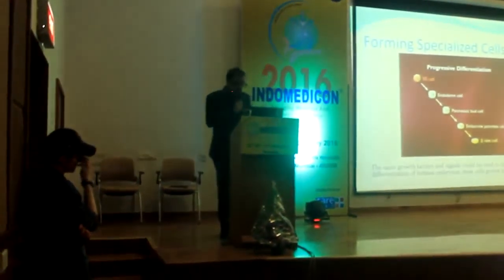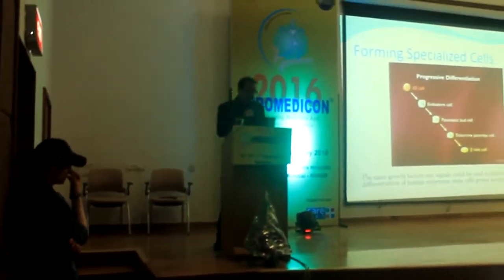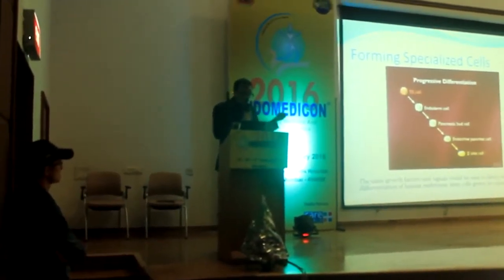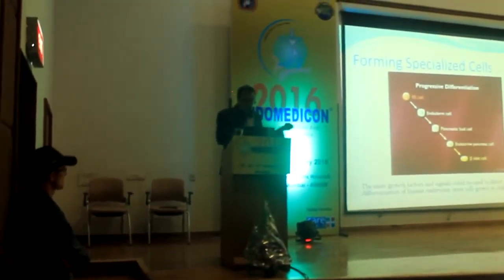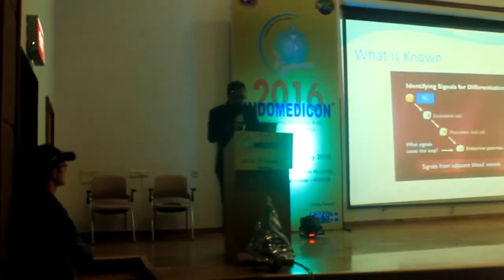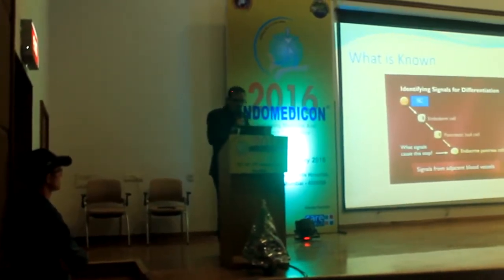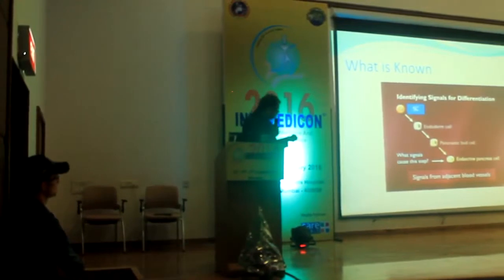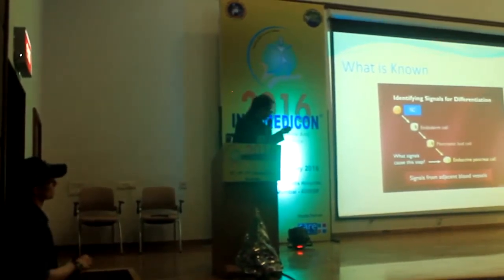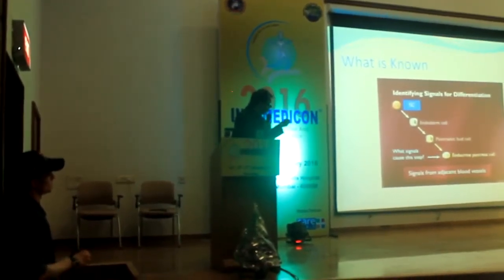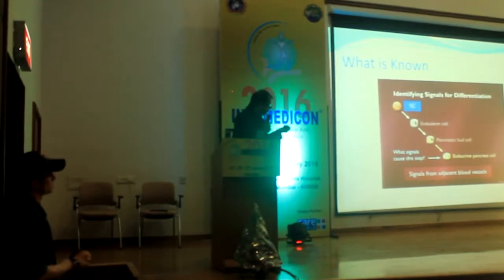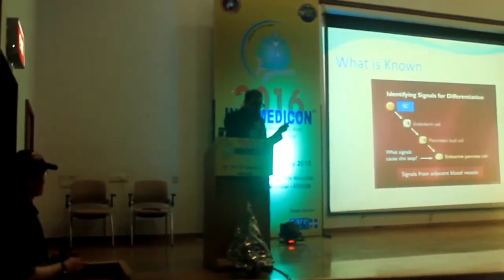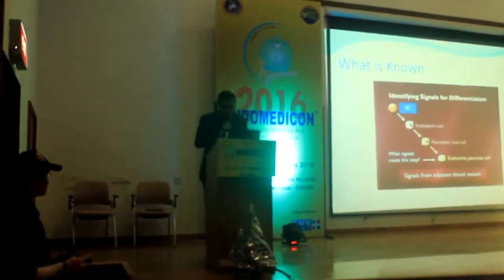Till the cells reach each other, they cannot differentiate. The information is transferred through what you call inducing agents. Now, if you see what are the signals causing these types of cells, the inducing agents which are important for this differentiation — I will show you in the subsequent slide which are required. Without that inducing agent, the cell cannot differentiate at the required level.